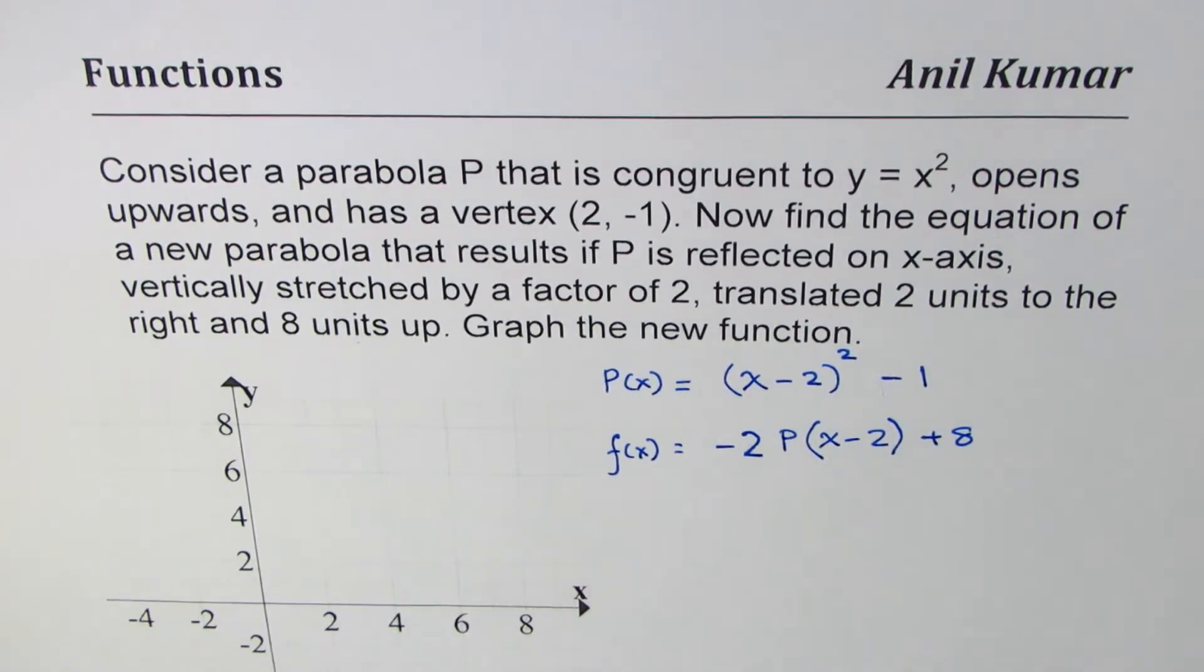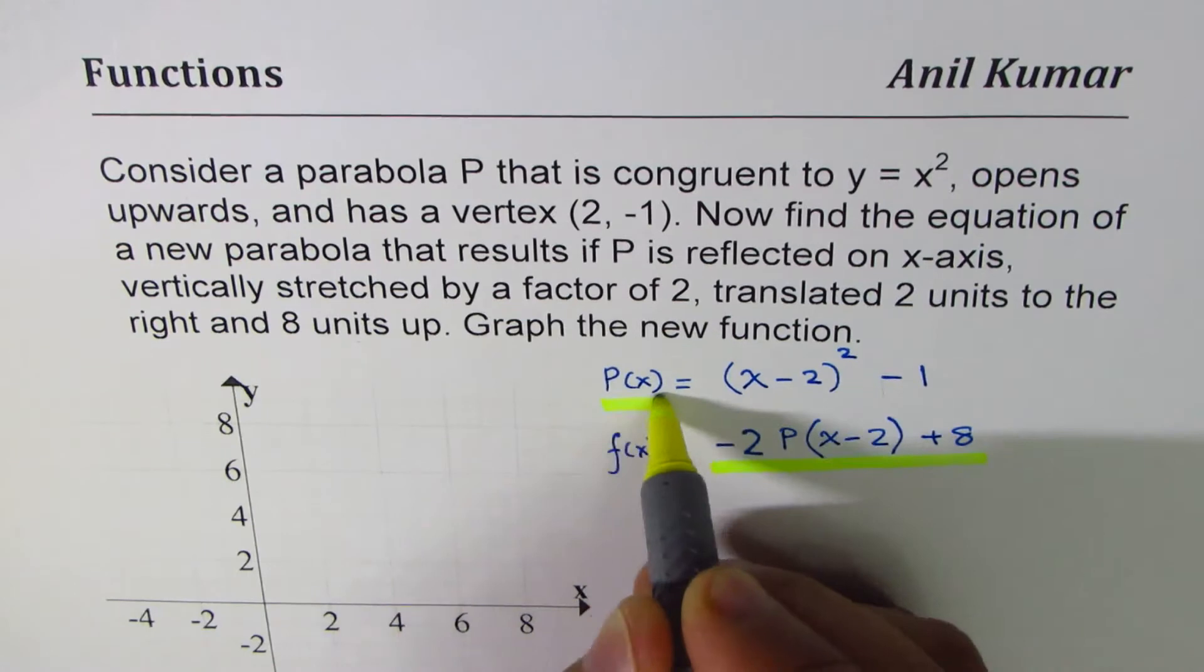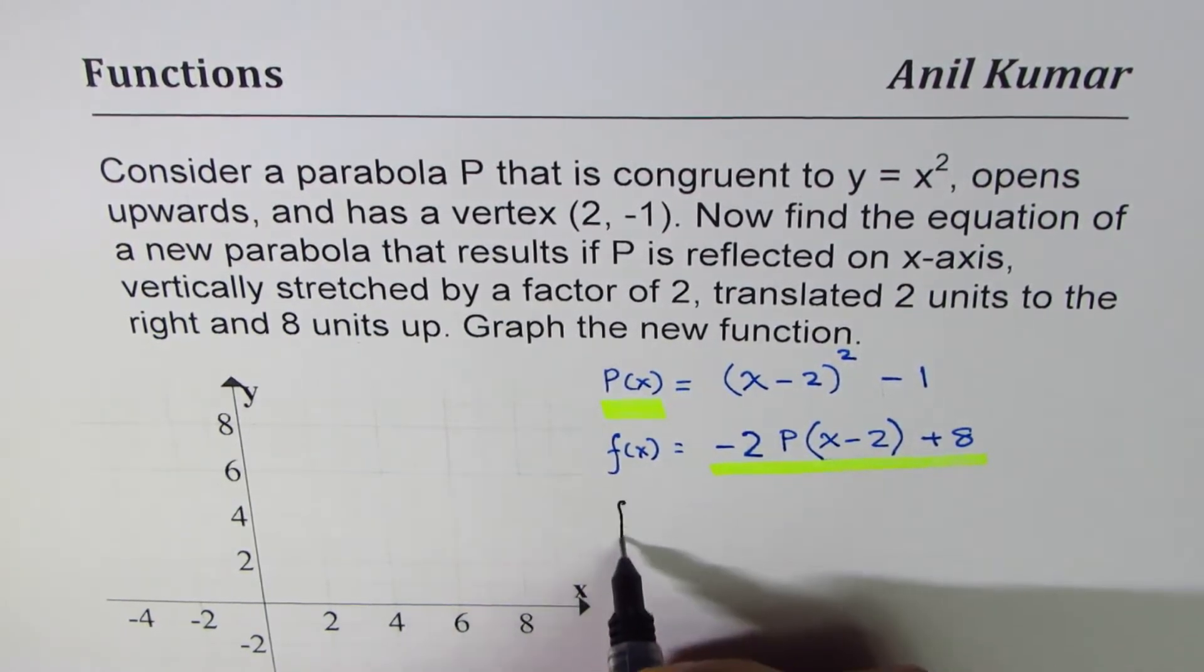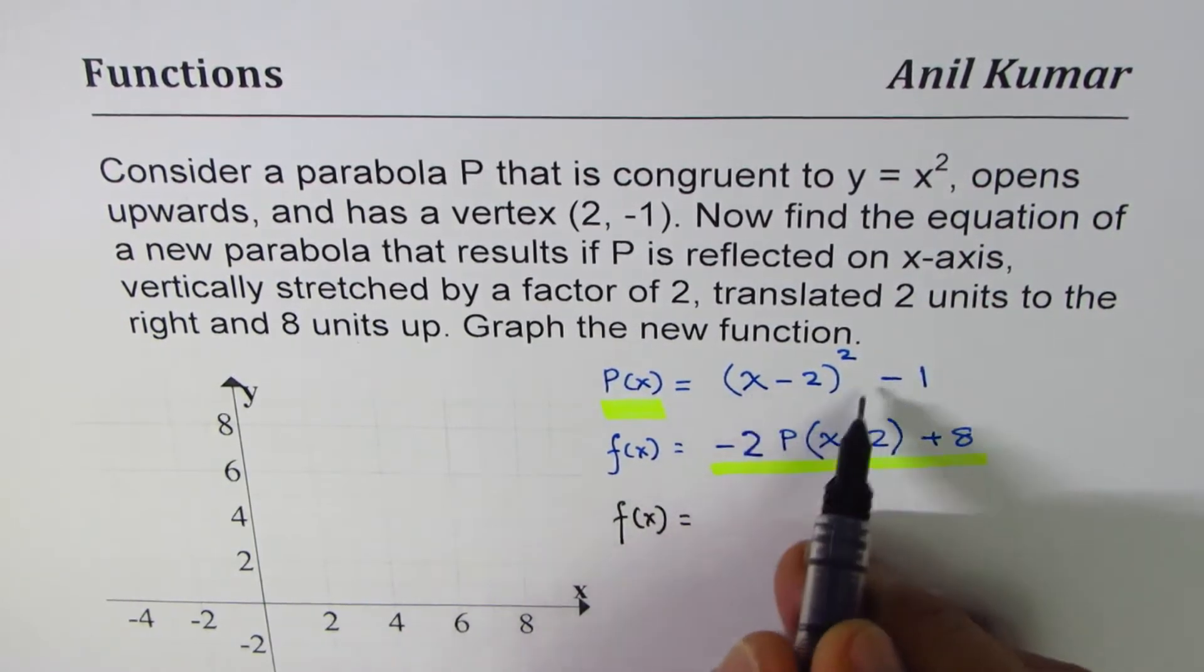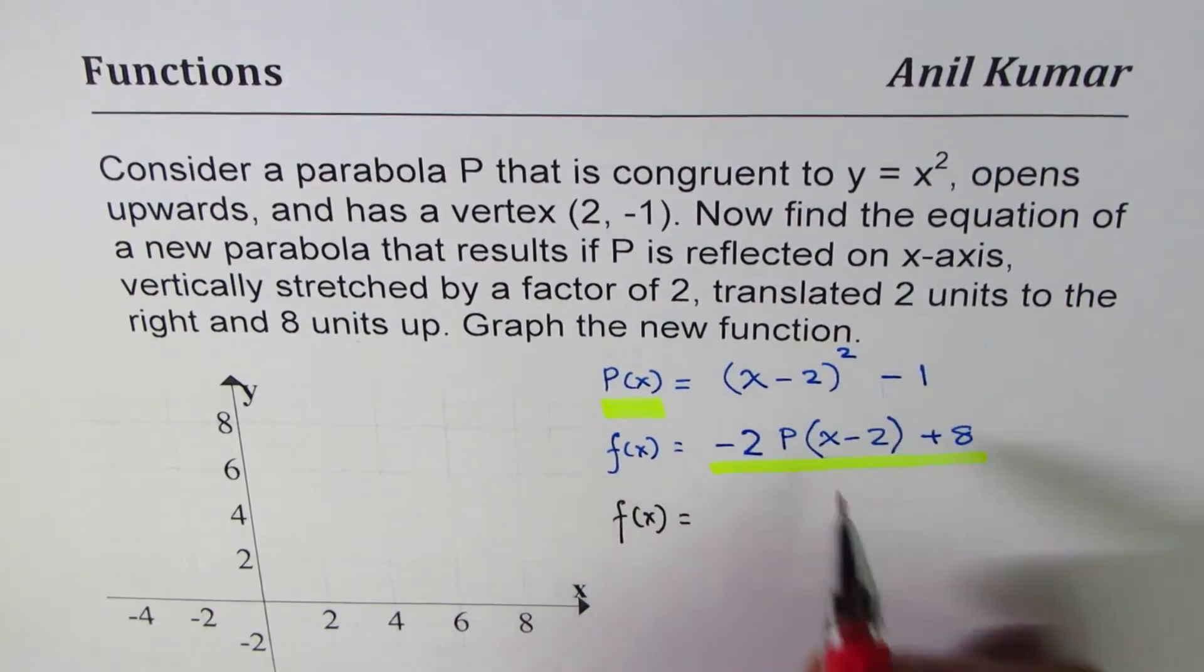So when you translate it 2 units to the right, that value becomes x - 2. Translate 2 units to the right and 8 units up, plus 8. So this is the kind of transformation which is taking place. I only wrote this for you to understand that this transformation is on that function.